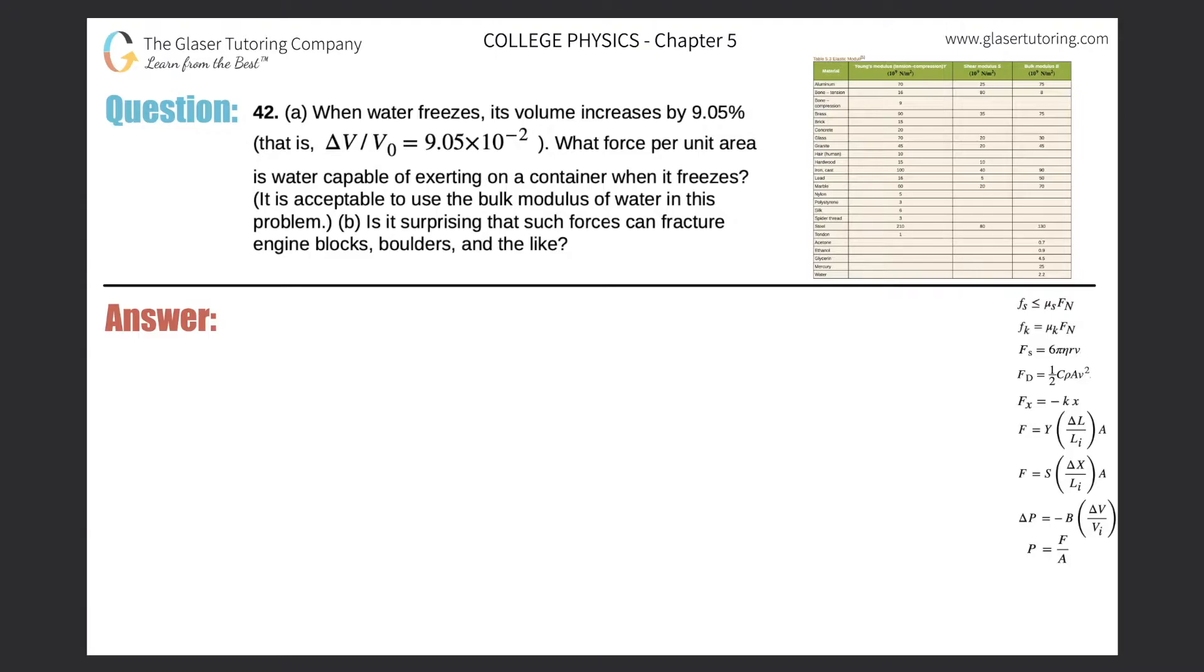Number 42. When water freezes, its volume increases by 9.05%. That is, the change in volume per the initial volume is equal to 9.05 times 10 to the minus 2. What force per unit area, aka pressure, is water capable of exerting on a container when it freezes? It is acceptable to use the bulk modulus of water in this problem.